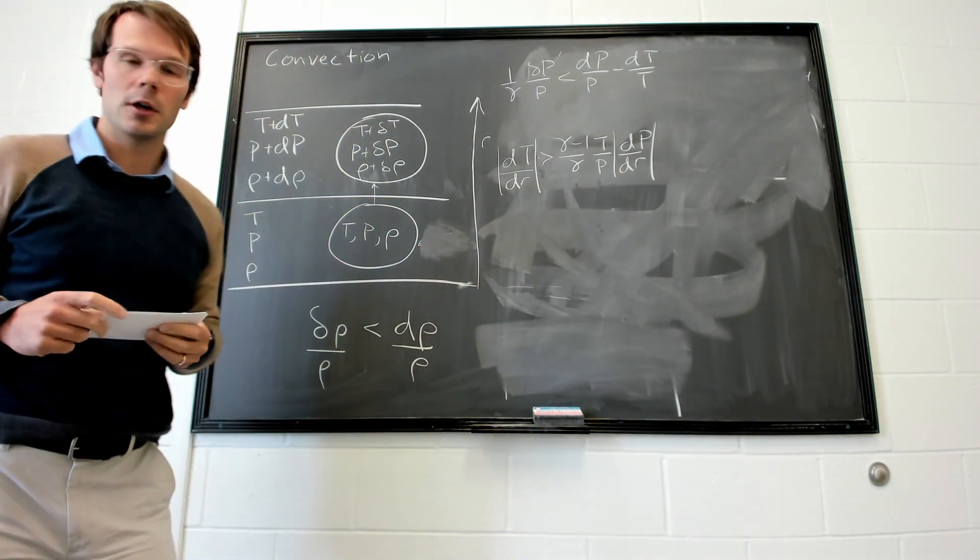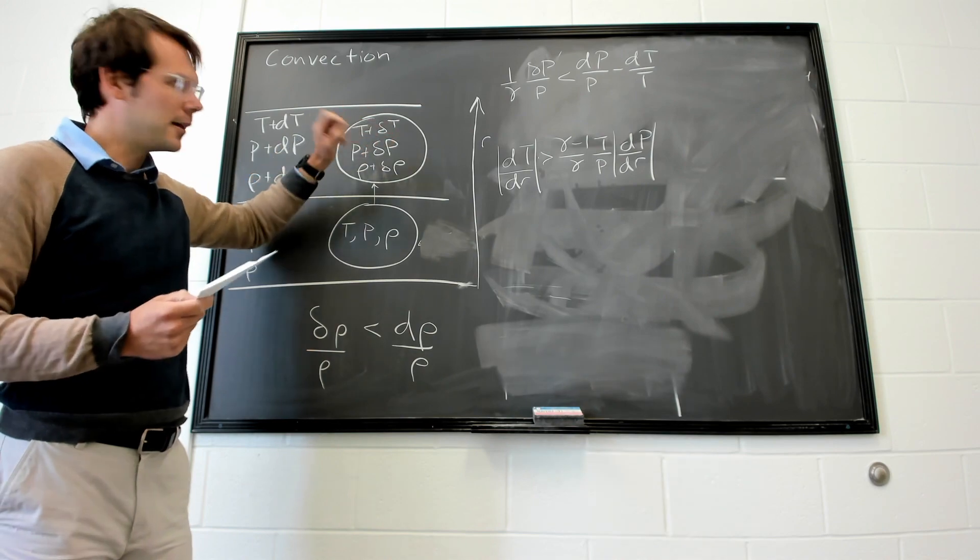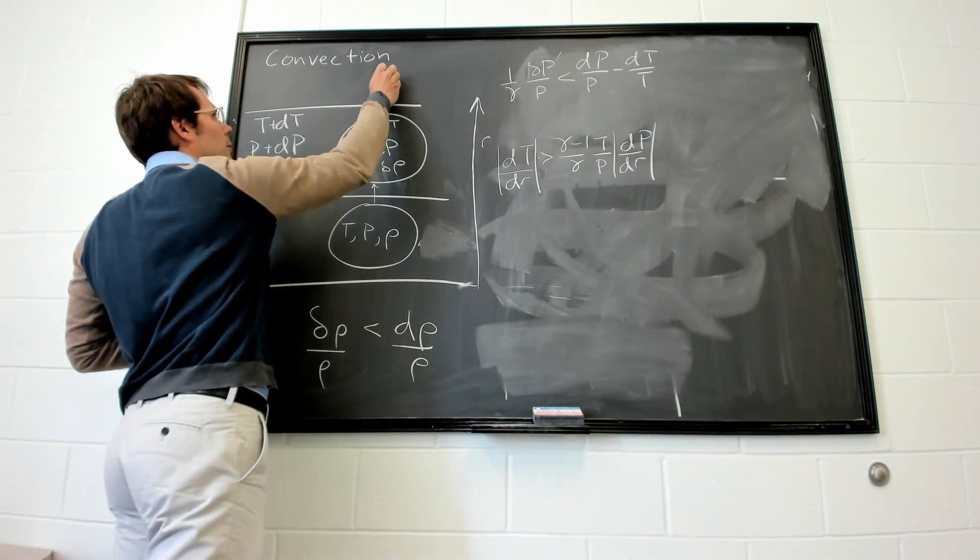When the temperature gradient exceeds this here on the right, convection is most likely to occur. Because this cell, when it moves up to here, has a lower density and therefore feels a buoyant force and will continue going upwards.